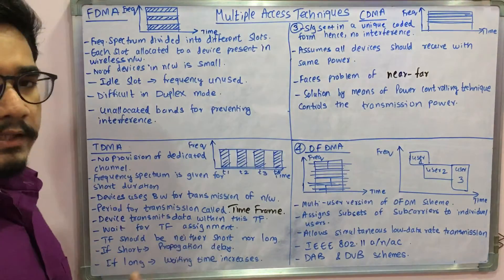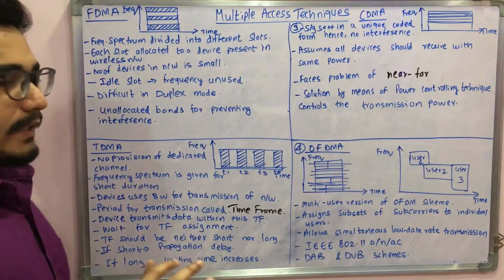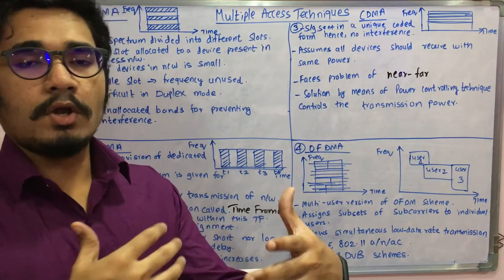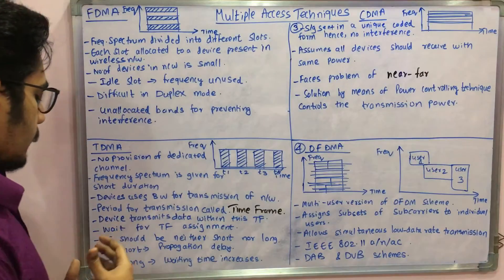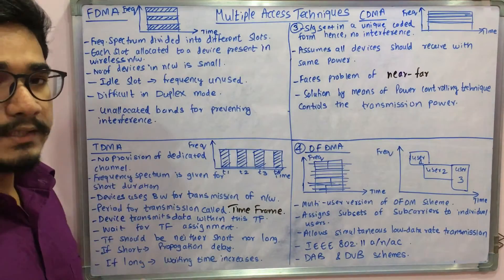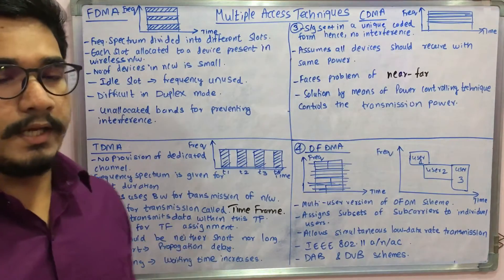The TF should be neither short nor long. The time frame which you give should not be too long or too short. If there is a case where you assign the time frame as short, then there could be a chance that there is a propagation delay.